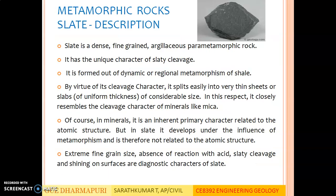The next metamorphic rock is Slate. Description of Slate: Slate is a dense, fine-grained, argillaceous, parametamorphic rock. It has the unique character of slaty cleavage. It is formed out of dynamic or regional metamorphism of shale. By virtue of its cleavage character, it splits easily into very thin sheets or slabs of considerable size. In this respect, it closely resembles the cleavage character of minerals like mica. In minerals, cleavage is an inherent primary character related to atomic structure, but in slate it develops under the influence of metamorphism and is therefore not related to atomic structure. Extreme fine-grained size, absence of reaction with acids, slaty cleavage and sheen on surfaces are diagnostic characteristics of slate.